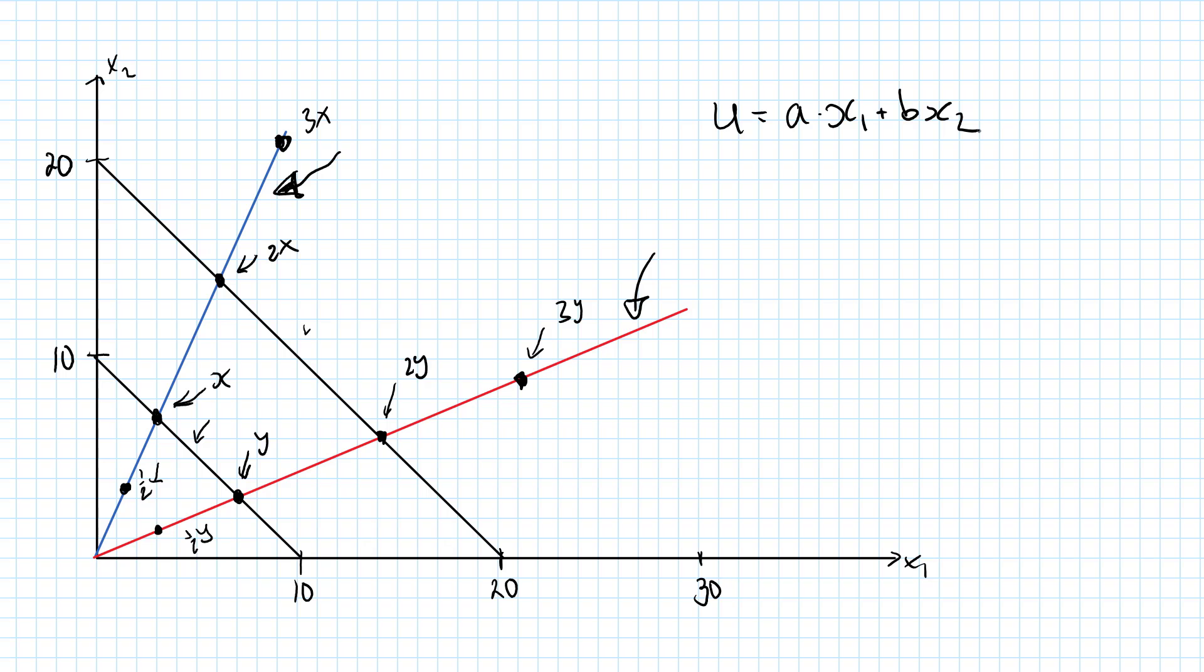All we need to do to prove that preferences are homothetic is to show that this utility function is homogeneous of degree one. Well, that's pretty straightforward.